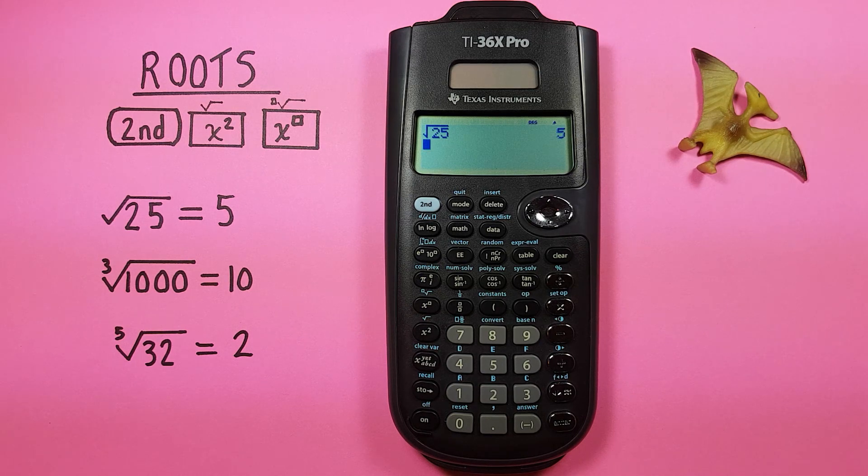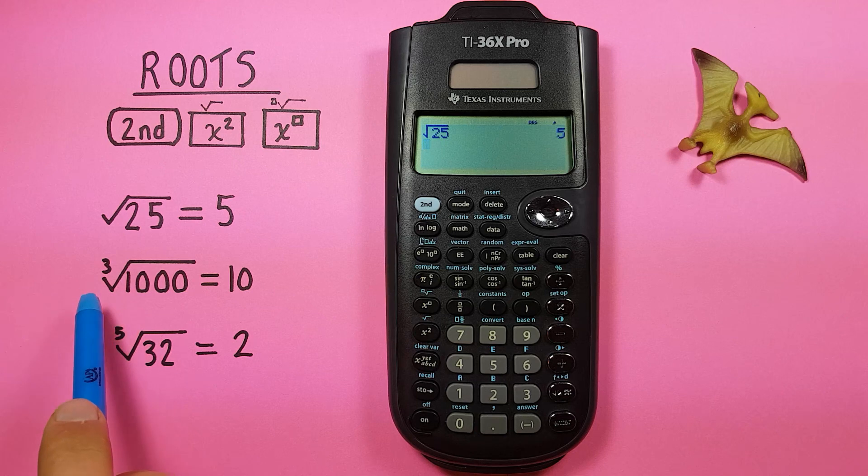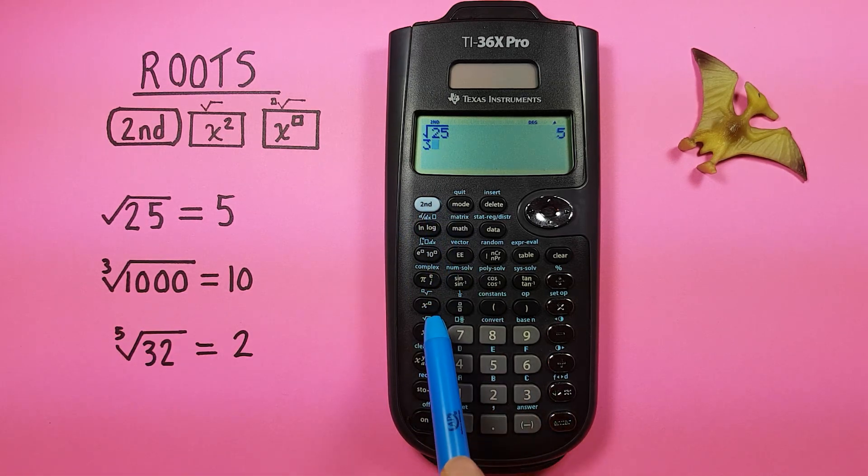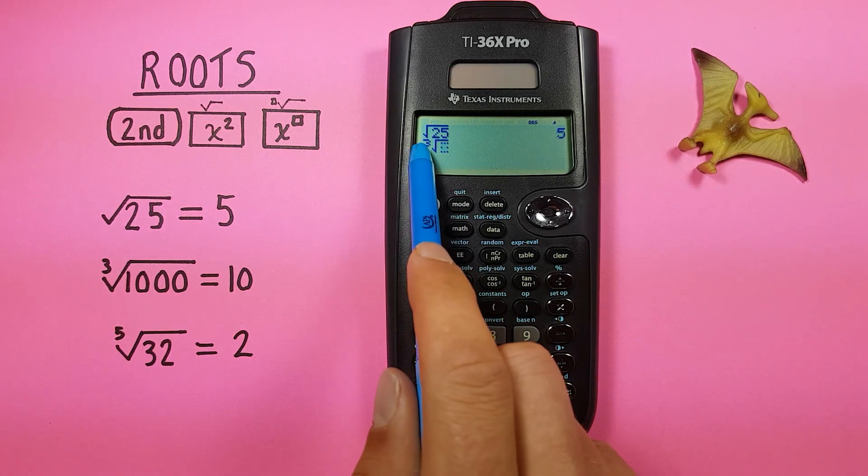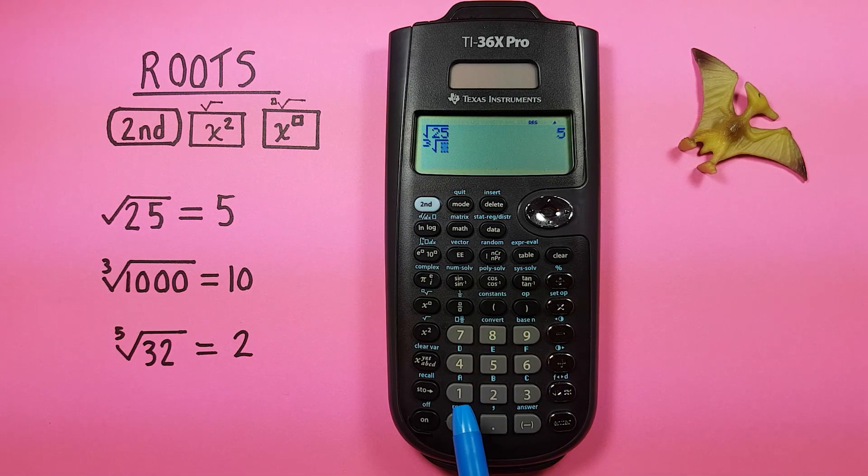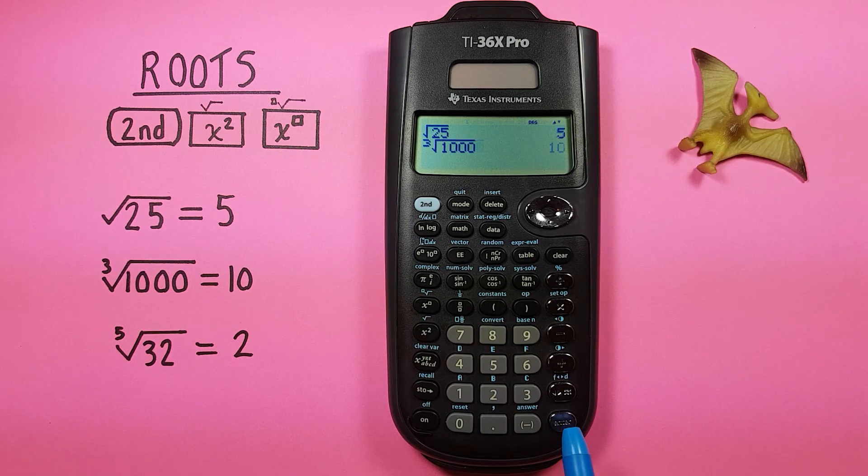So for example if we wanted to find the cube root of 1000 you can start by entering the root, for us that'll be 3, and then you go second function, this key here, this exponent key. You can see we have now that 3 has moved up into the third root position, and then we enter the number we want to find the result for, so 1000, press enter, and you can see the third root of 1000 is 10.